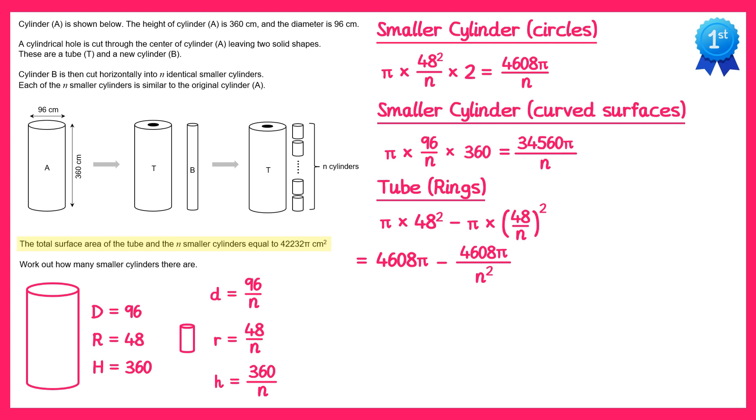Now sticking with the tube let's also do the curved surface area on the outside. Again we'll use the formula pi dh, so it's pi times the diameter times the height, and this one's not too bad, it's 34,560 pi.